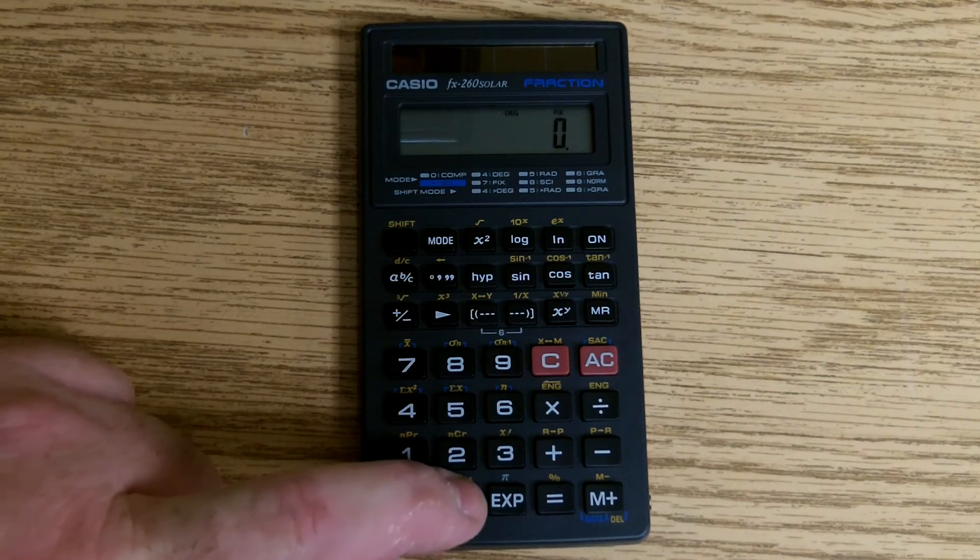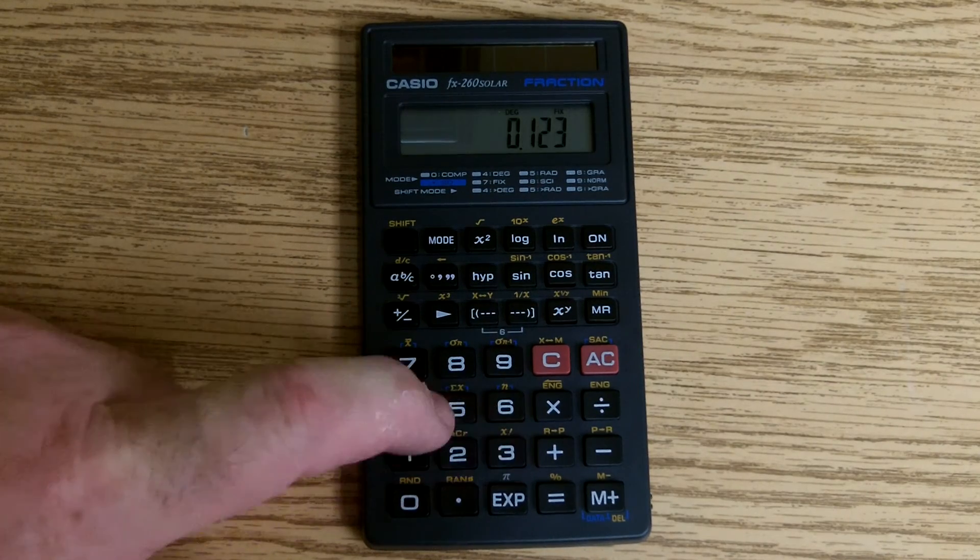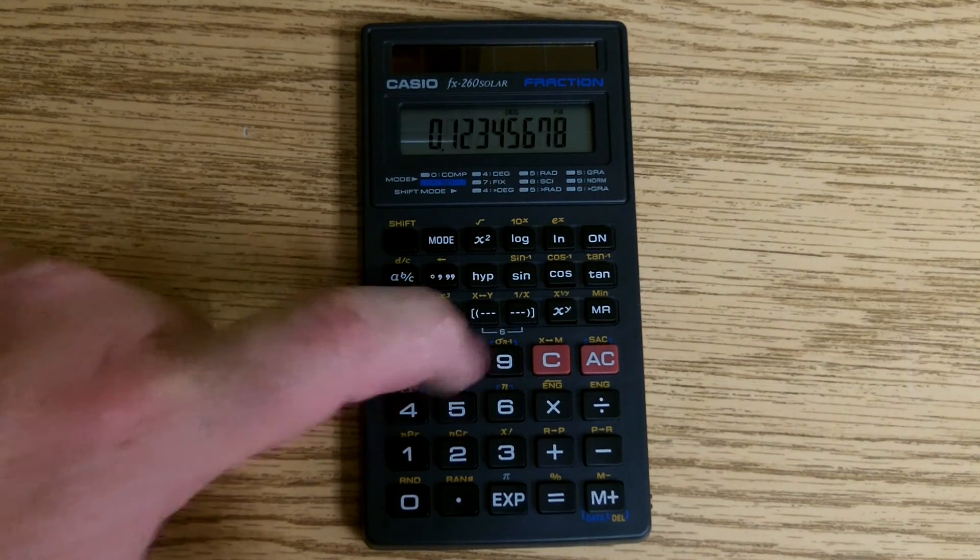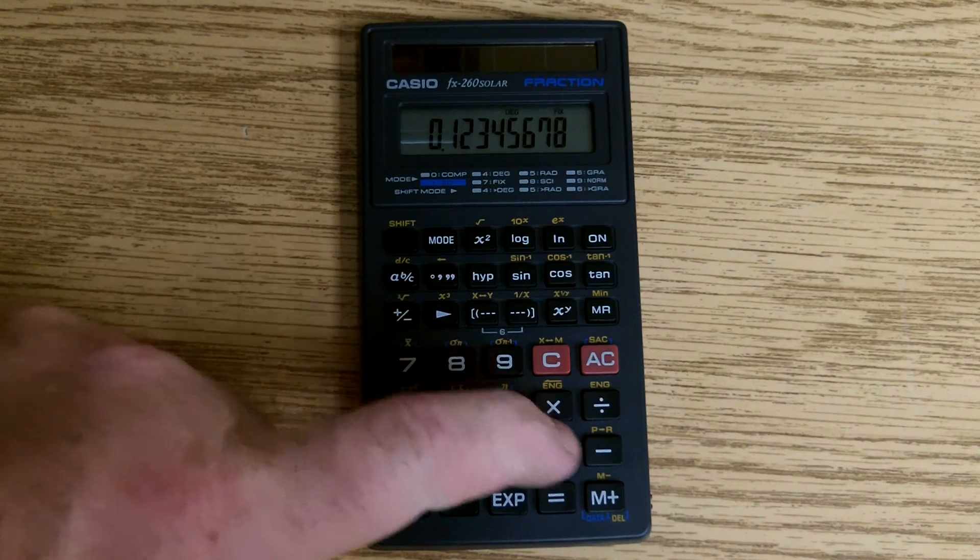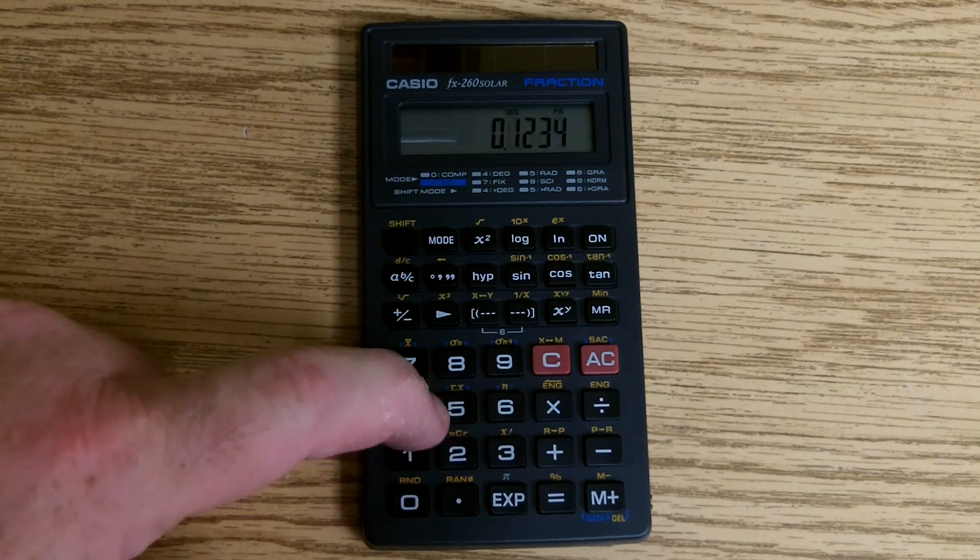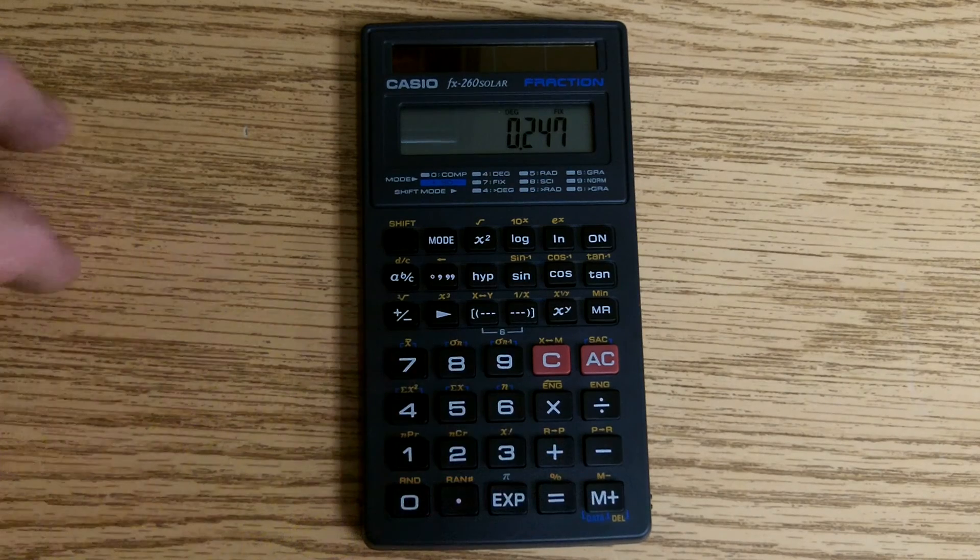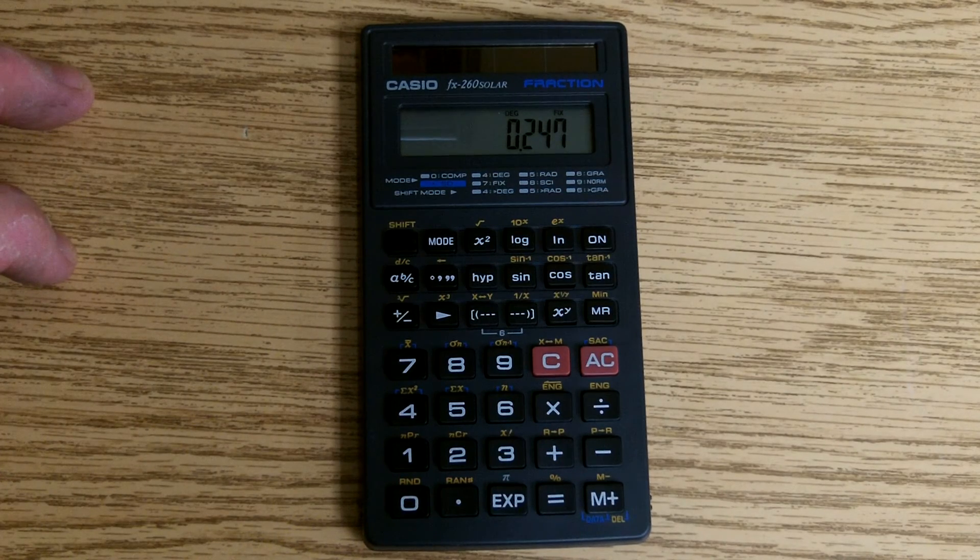Any calculations you make, no matter how many decimal places you put in, will always come out with 3, because that's how many we put in.